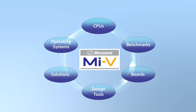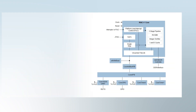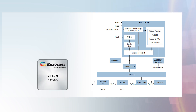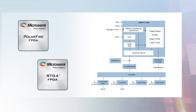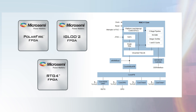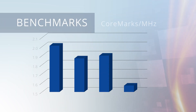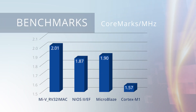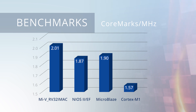First, CPUs. MicroSemi has developed several soft Mi5 RISC-V cores that can be used in our RTG-4, PolarFire, and Igloo-2 FPGAs. Benchmarks are just that — what is the expected performance for each RISC-V core in each supported family?